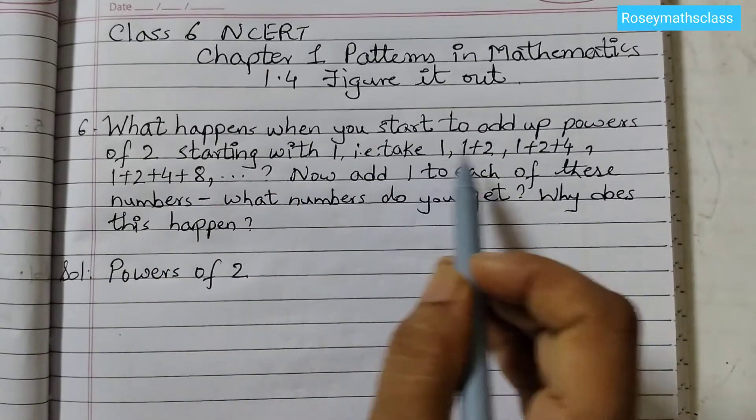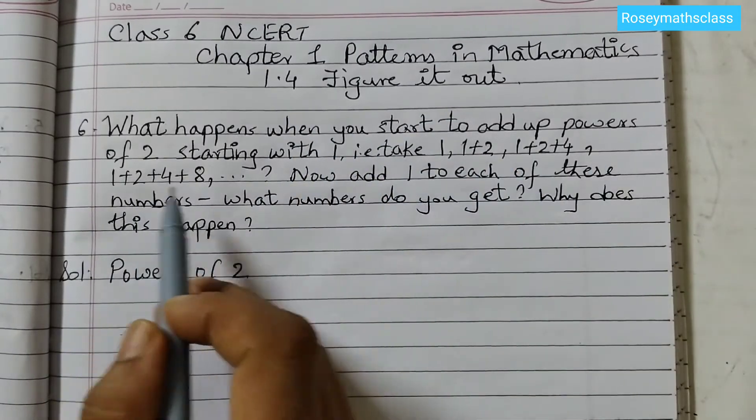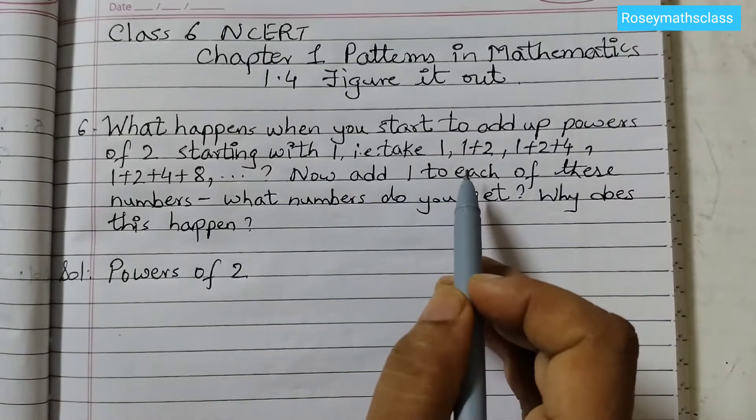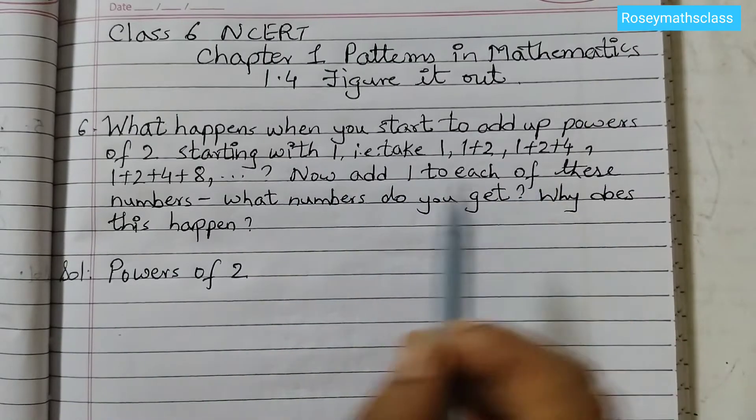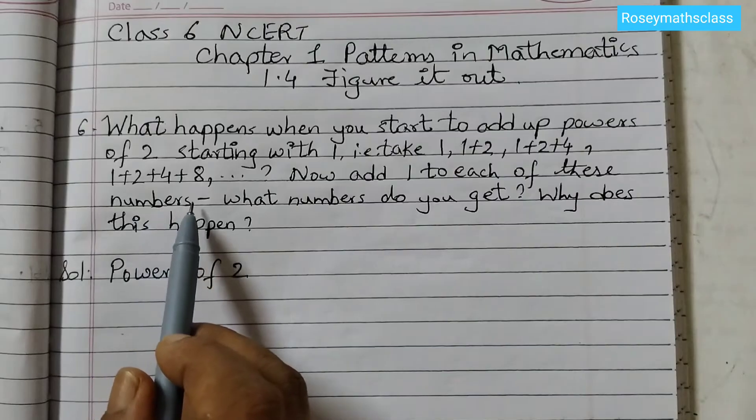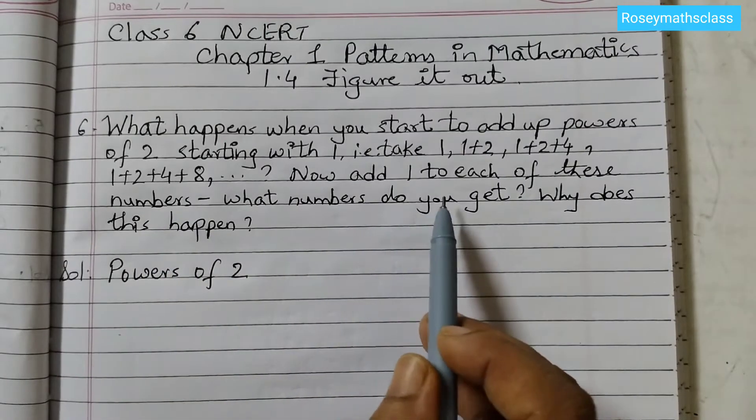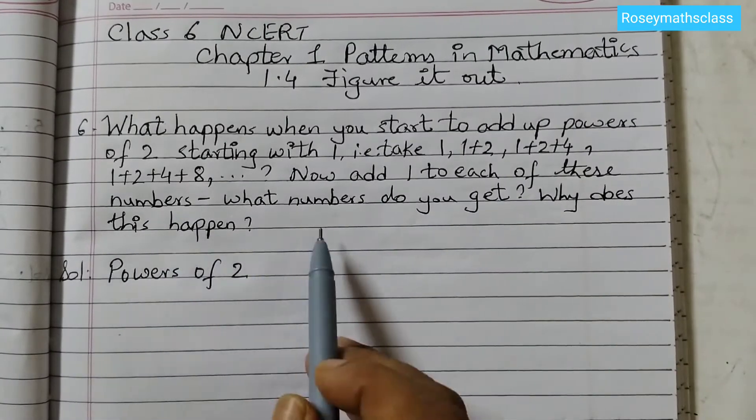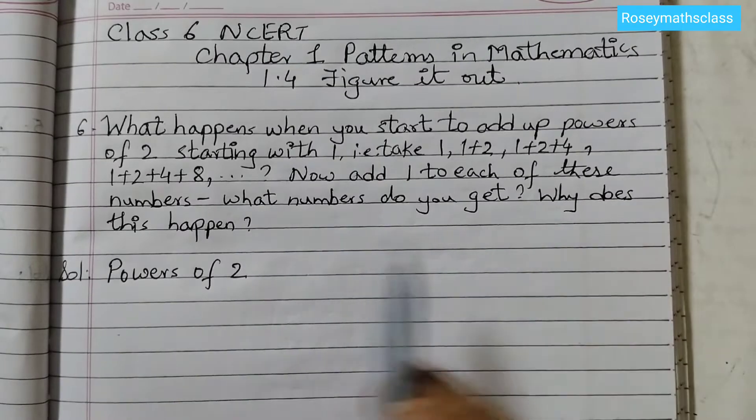Let us discuss question number 6 of 1.4 figure it out. What happens when you start to add up powers of 2 starting with 1? That is take 1, 1 plus 2, 1 plus 2 plus 4, 1 plus 2 plus 4 plus 8. Now add 1 to each of these numbers. What numbers do you get? Why does this happen?